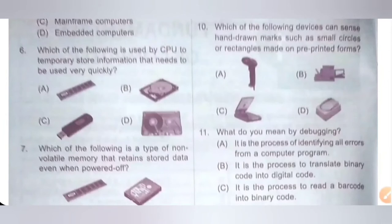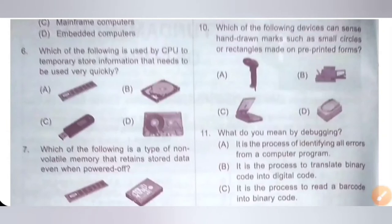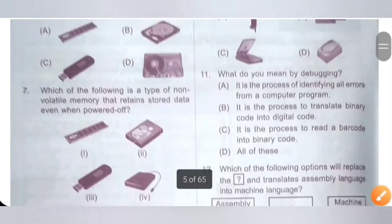Question 10: Which of the following devices can sense hand-drawn marks such as small circles or rectangles made on pre-printed forms? The device which can sense hand-drawn marks such as small circles or rectangles made on pre-printed forms is OMR — Optical Mark Reader. Option B is the correct answer.